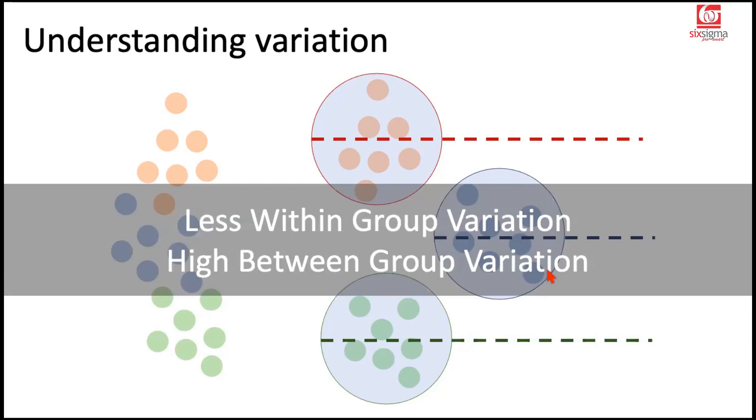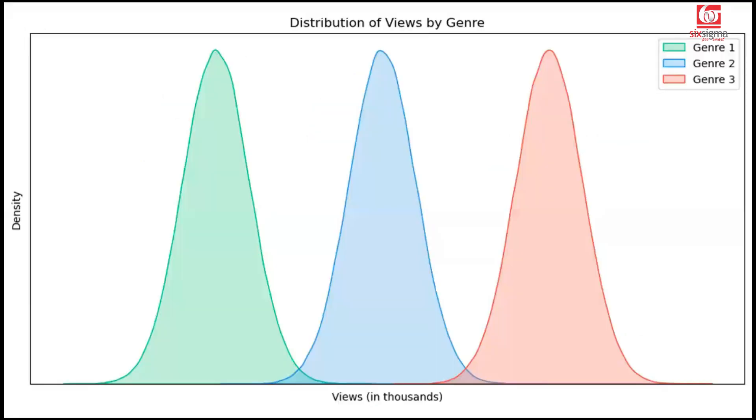We can say this is the case of less within group variation and high between group variation. Remember, I said ANOVA breaks the variation into these two parts. Just covered one case of that. And if we were to imagine this through distributions, it might look like this. These are three genres. And while their variation or the shape of the distribution is nearly comparable, their means are very, very different.